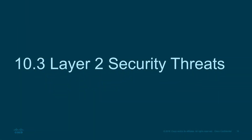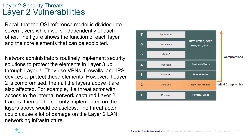Layer 2 Security Threats. Layer 2 Vulnerabilities. The OSI reference model is divided into seven layers which work independently of each other. Each layer has functions and core elements that can be exploited — the application, presentation, and session layers expose HTTP, HTTPS, POP3, IMAP, etc.; the transport layer has protocols and ports that can be compromised; the network layer exposes IP addresses; the data link layer exposes Ethernet frames; and the physical layer exposes physical links. We are focusing on Layer 2 — the data link layer — and the Ethernet frames that can be compromised.